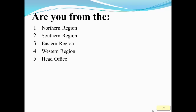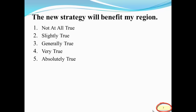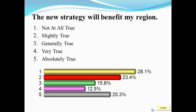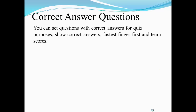Here we have a single number question, which we've actually set up as a demographic. The little box in the bottom right-hand corner shows how many people have voted. When we look at it by demographics, we see that the southern region think more highly of it than the northern region — 38% against 8%.